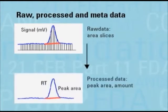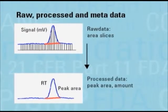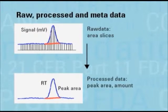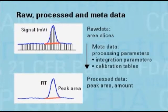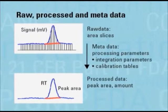From this raw data, the software calculates peak areas and amounts — the so-called processed data. The parameters used for calculating the processed data from the raw data are called metadata. In chromatography, these are mainly integration parameters and calibration factors.